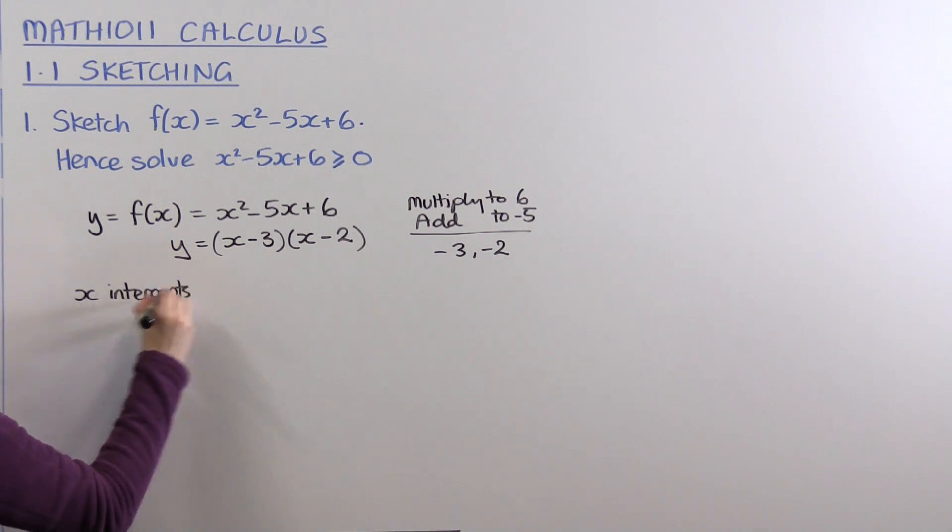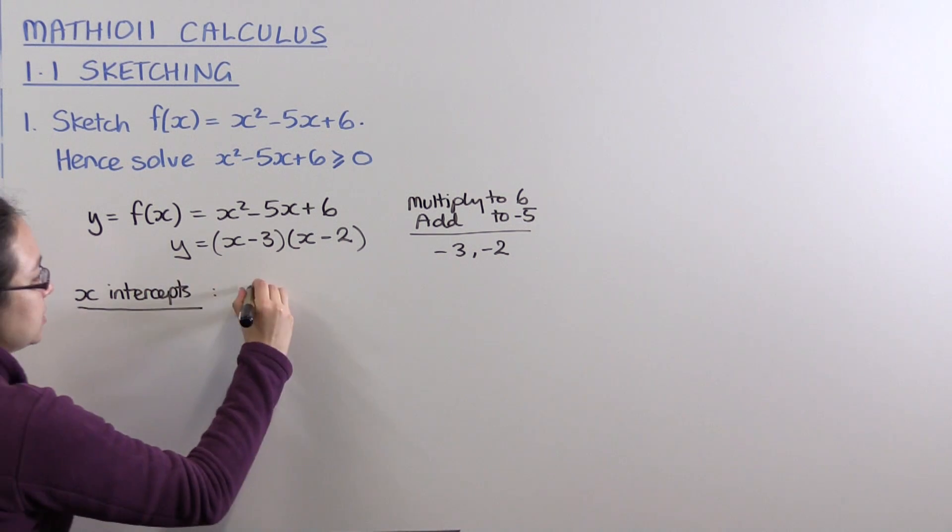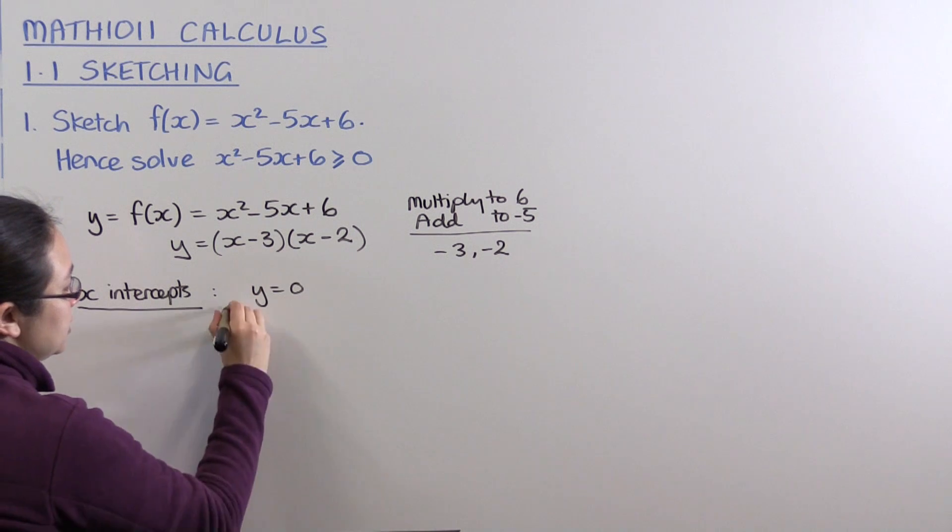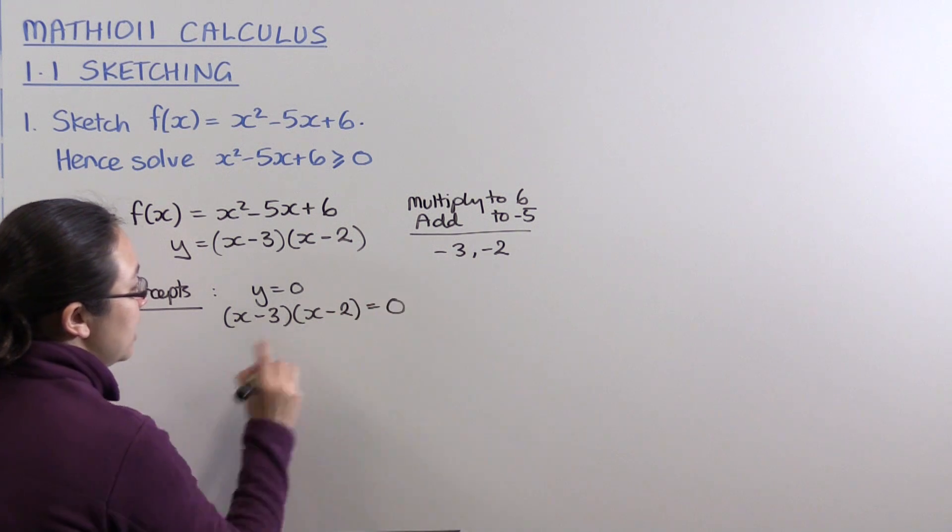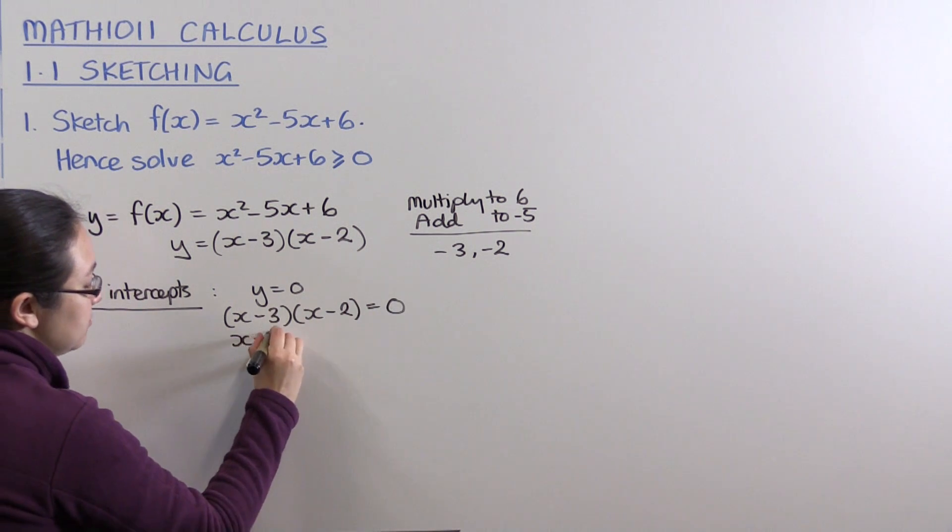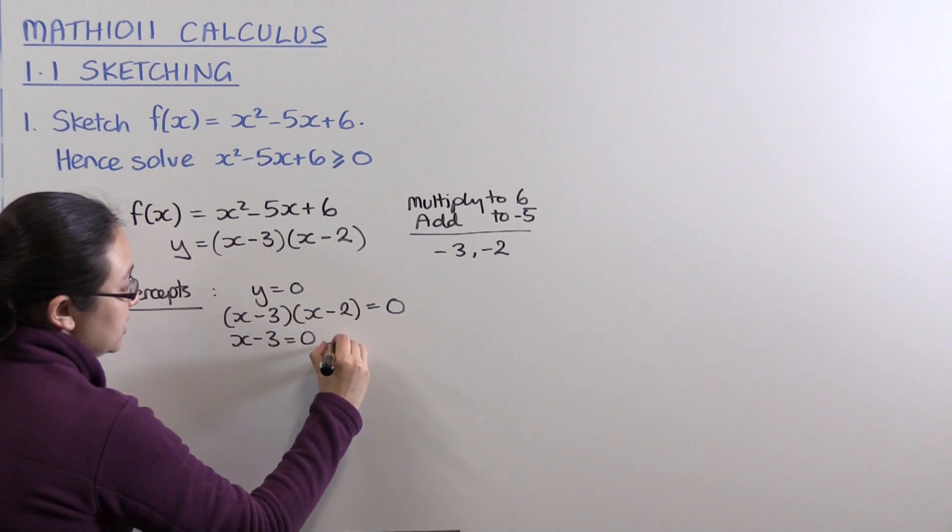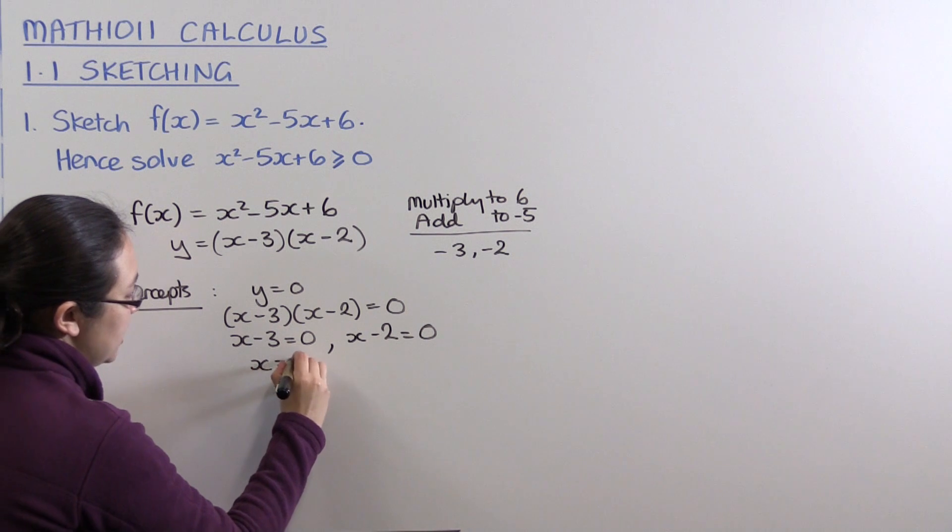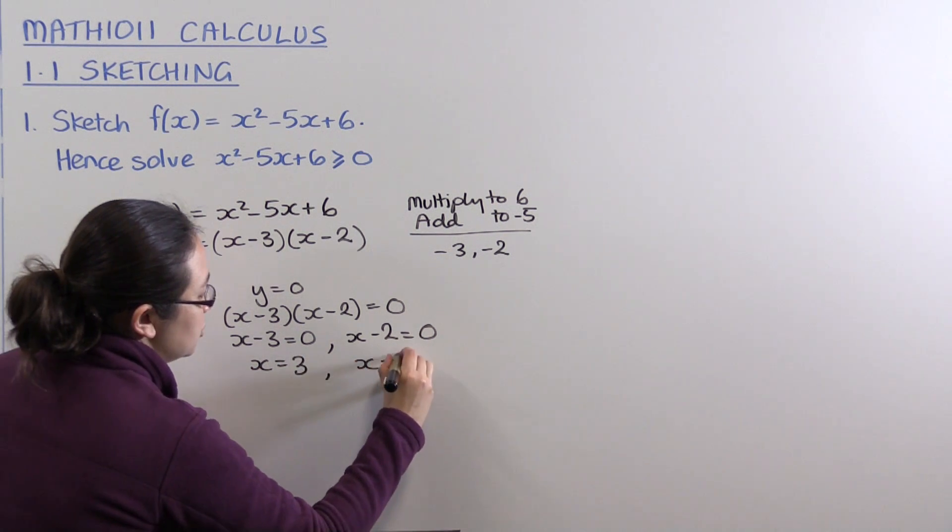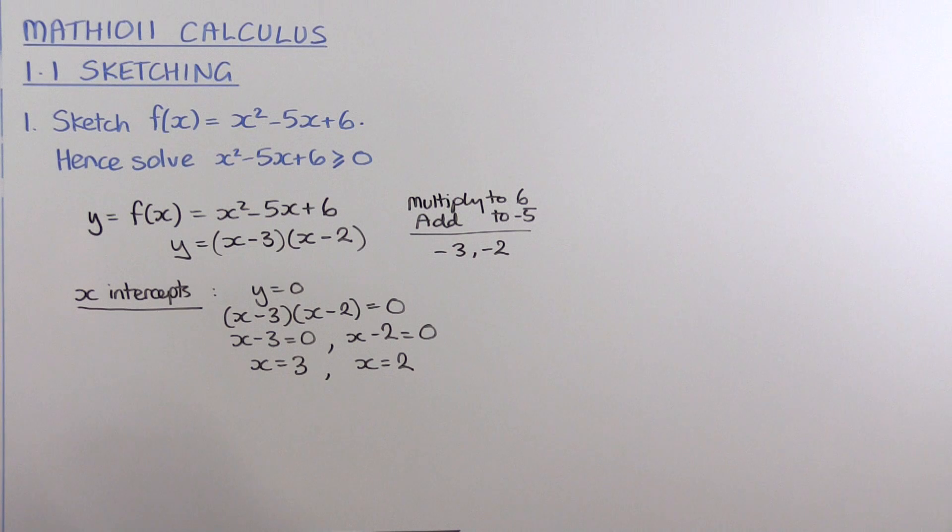To find x-intercepts, we solve y = 0. So we're solving (x - 3)(x - 2) = 0. If two things multiply to give 0, one of them is 0. So either x - 3 = 0 or x - 2 = 0, meaning x = 3 or x = 2. Those are our x-intercepts.